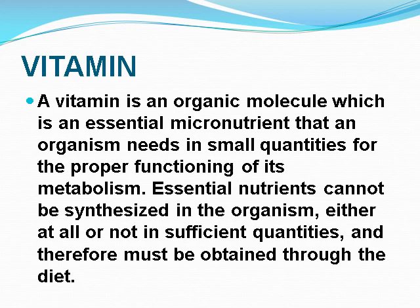What is a vitamin? A vitamin is an organic molecule which is an essential micronutrient that an organism needs in small quantities for the proper functioning of its metabolism. Essential nutrients cannot be synthesized in the organism, either at all or not in sufficient quantities, and therefore must be obtained through the diet. Such micronutrients which cannot be synthesized in our body but are needed for the body's metabolism must be consumed through diet — these are called vitamins.